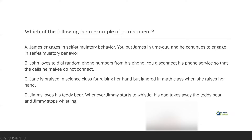Question seven: Which of the following is an example of punishment? Punishment is decreasing a behavior by adding or removing something. Always define the terms, especially when practicing — fluency, fluency, fluency. A: James engages in self-stimulatory behavior, you put James in timeout and he continues to engage in self-stimulatory behavior. The most important part of punishment — did the behavior decrease? It didn't. Behavior didn't decrease, so that's not punishment.